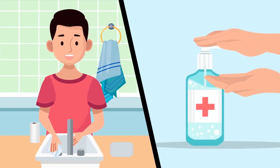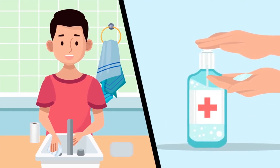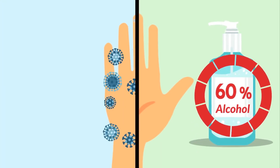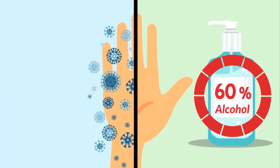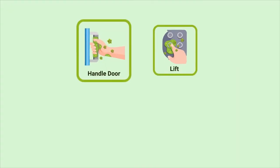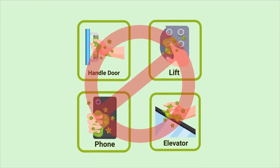If soap and water are unavailable, use an alcohol-based hand sanitizer. Hand sanitizers that contain at least 60% alcohol are an effective way to kill some of the germs on your hands. It can reduce your chances of getting sick and spreading germs to others.